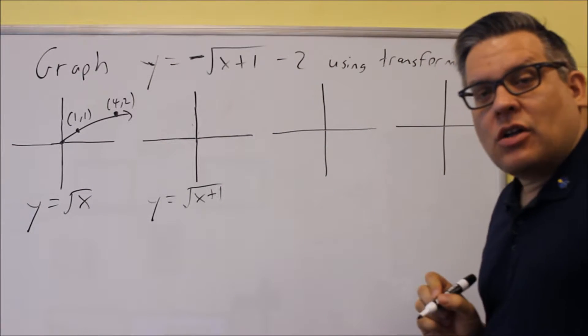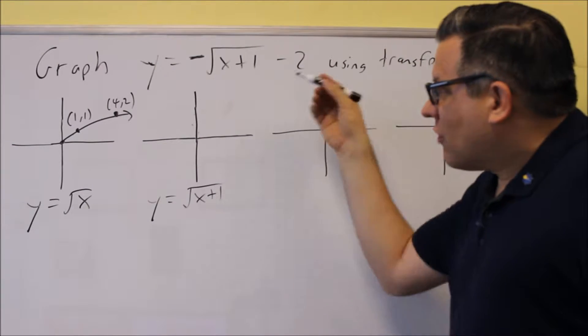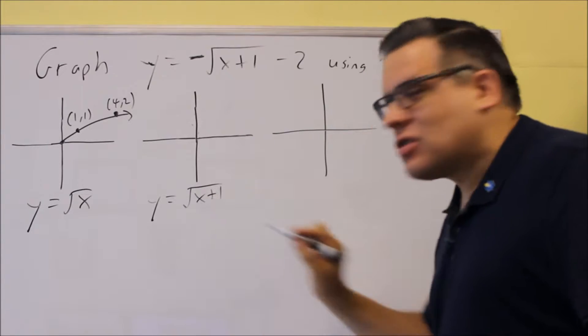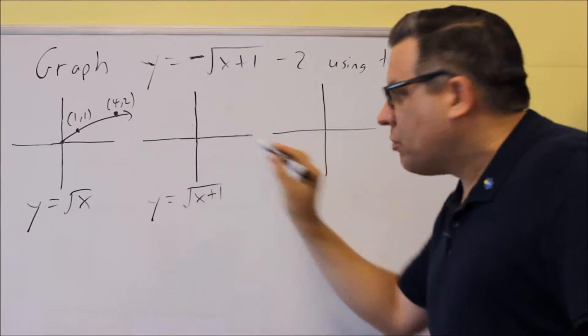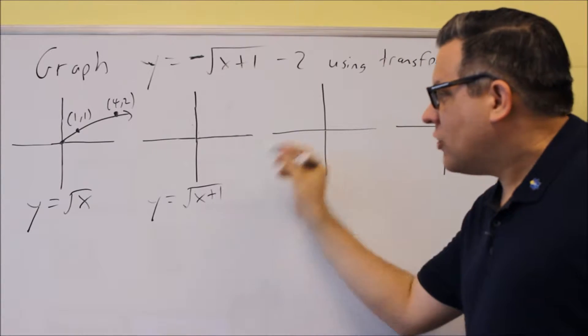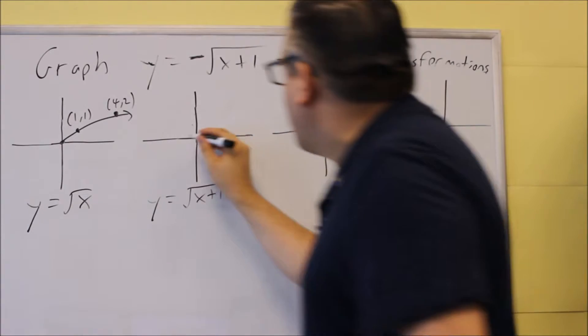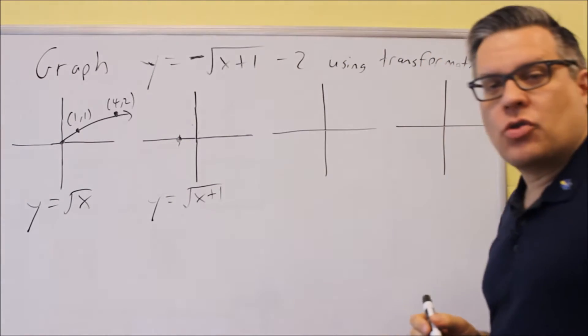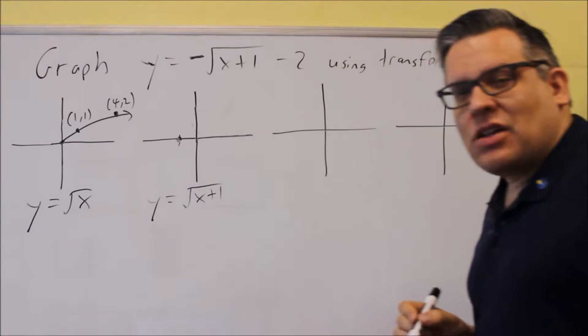So the plus 1 inside, what that's going to do is shift the graph one place to the opposite direction of this sign. So instead of moving it one place to the right for the positive, you're going to instead move it one place to the left. So your first point, instead of at 0, 0, it's now going to be at negative 1, 0.